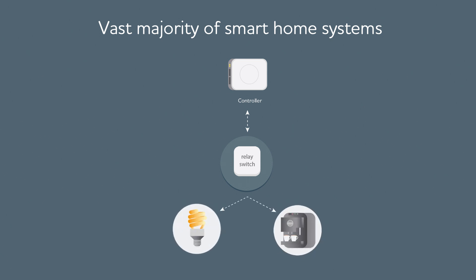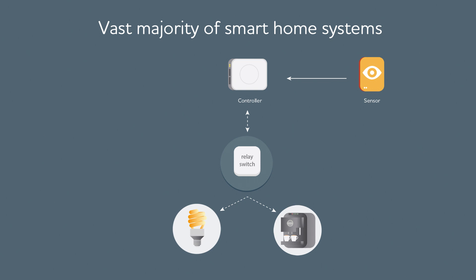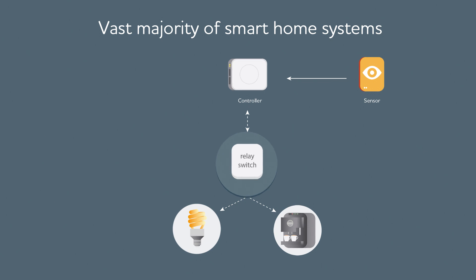If there is any sensor, it messages information about the activation to the controller. The controller, based on some rules, then issues a command to the relay. For example, when the motion sensor activates in the bathroom, the controller issues a signal to switch on the light there.